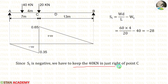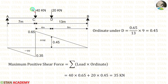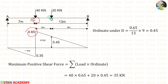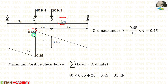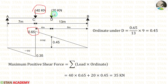With 40 kN just right of point C, the ordinate at C is 0.65. Now we calculate the ordinate under the 20 kN load, which is 9 meters from C. For 13 meters the ordinate is 0.65, so for 9 meters: (0.65/13) × 9 = 0.45. The maximum positive shear force = 40 × 0.65 + 20 × 0.45 = 35 kN.